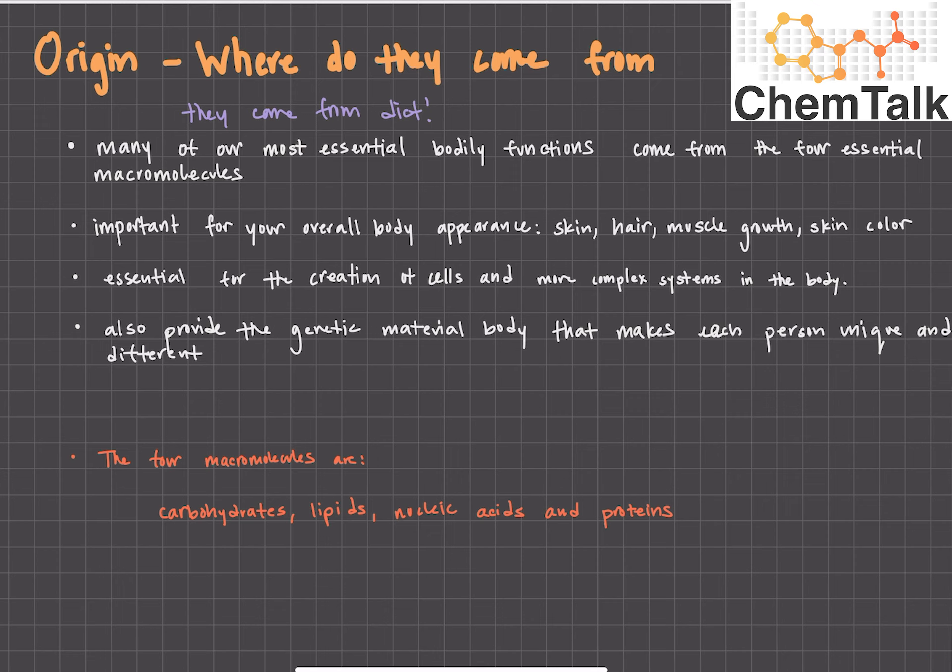One thing that these macromolecules are used for is your appearance. Your skin, your hair, your muscle growth, your skin color—all these things that people look for when they look for body appearance are all governed by these things that you get from your diet, like proteins, lipids, carbohydrates. You hear a lot of people talk about different diets to cut out certain things so they can change their appearance. That's why these macromolecules are so important to how you look.